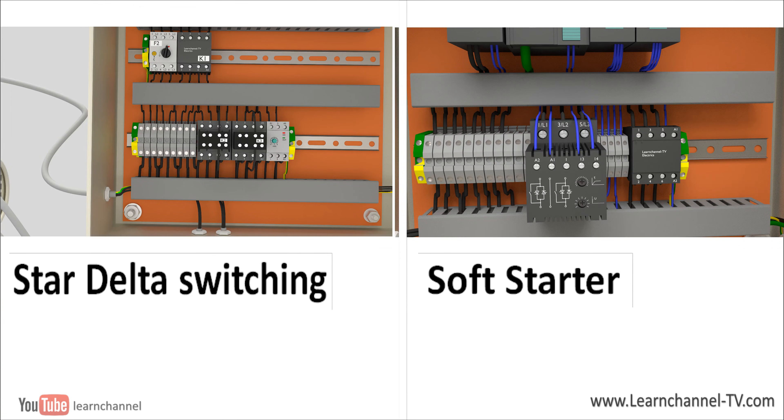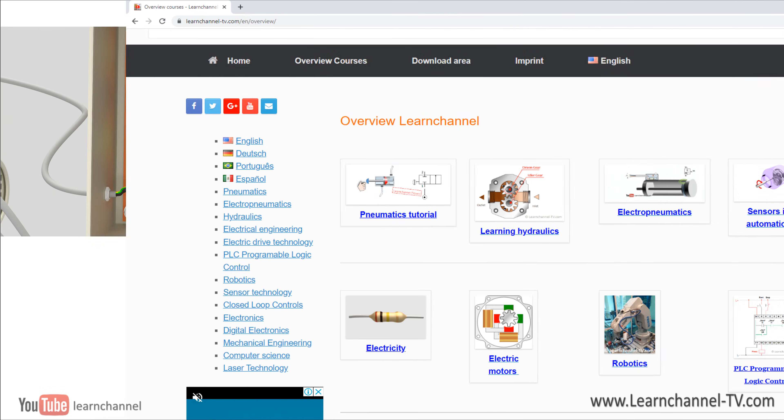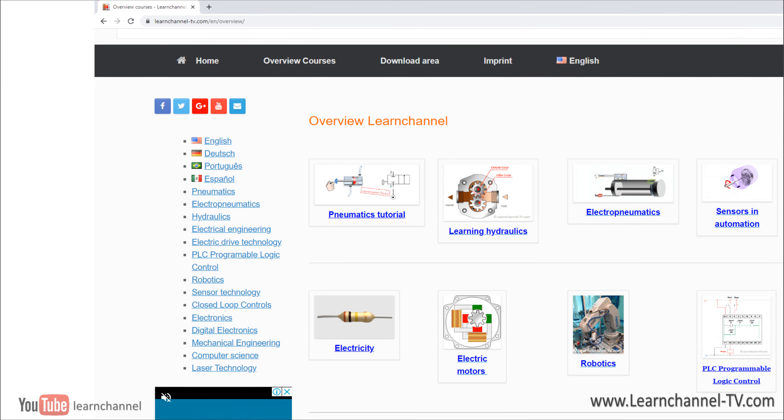In general, it can be said that star-delta starting is particularly suitable for very large three-phase induction motors, since here electronic switching by using a soft starter might be impossible or costly. For small induction motors, the soft starter is a viable alternative because of less space and less wiring needed.